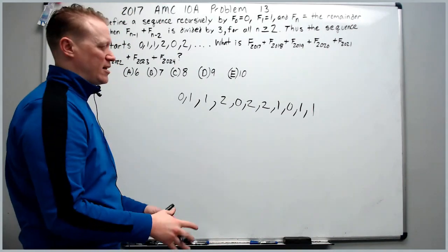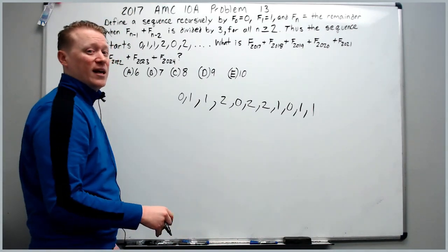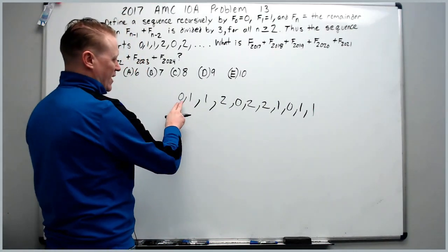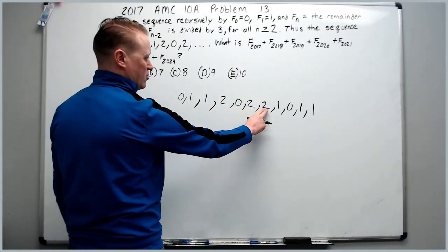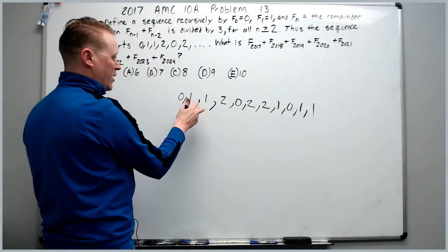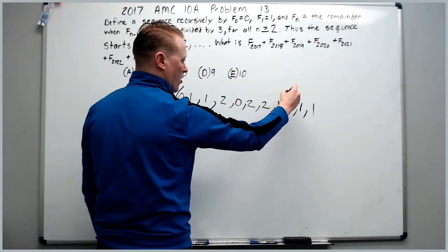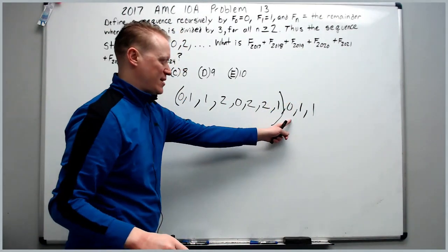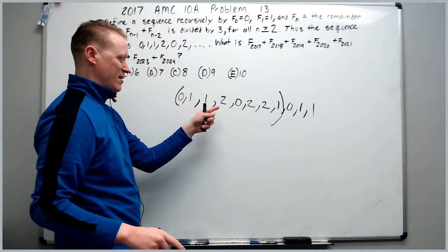We've got 0,1,1,2,0,2,2,1,0,1,1. 0,1,1 matches 0,1,1. Therefore, all the way to here is our repeated portion. This is going to repeat because it's doing the same thing these terms were doing.